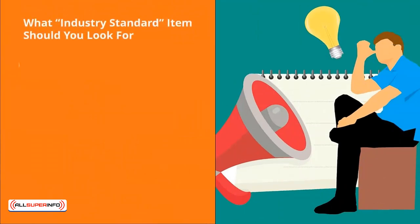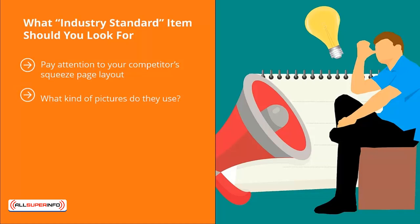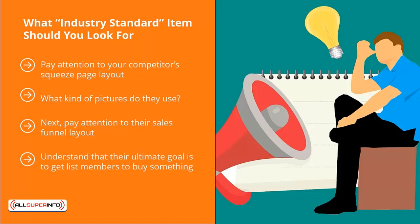Pay attention to your competitors' squeeze page layout — the sign-up page they use to get their target audience to join their mailing list. Note the pictures they use, the text they present, how they format it, whether they tell stories or show videos. Also pay attention to their sales funnel layout: how do they get people to sign up and then sell a wide range of products and services to those list members? Try to figure out how their sales funnel is laid out and how it seeks to convert list members.